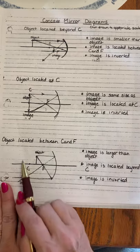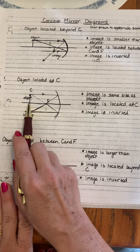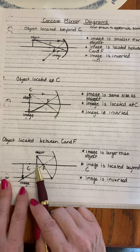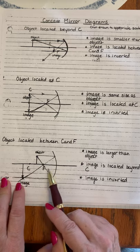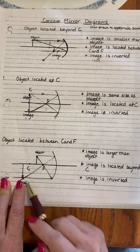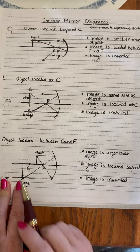Now imagine that we are coming, so we started here, we came to here, and now we're going to move up between C and F. If we go between C and F, now our image is back here and it is larger. It's upside down. The image is inverted, it's upside down, it's beyond C.